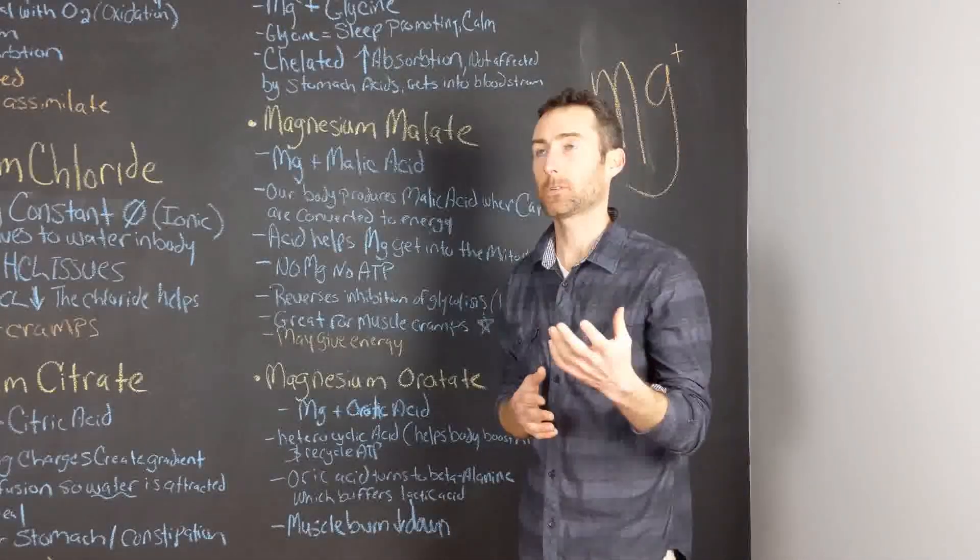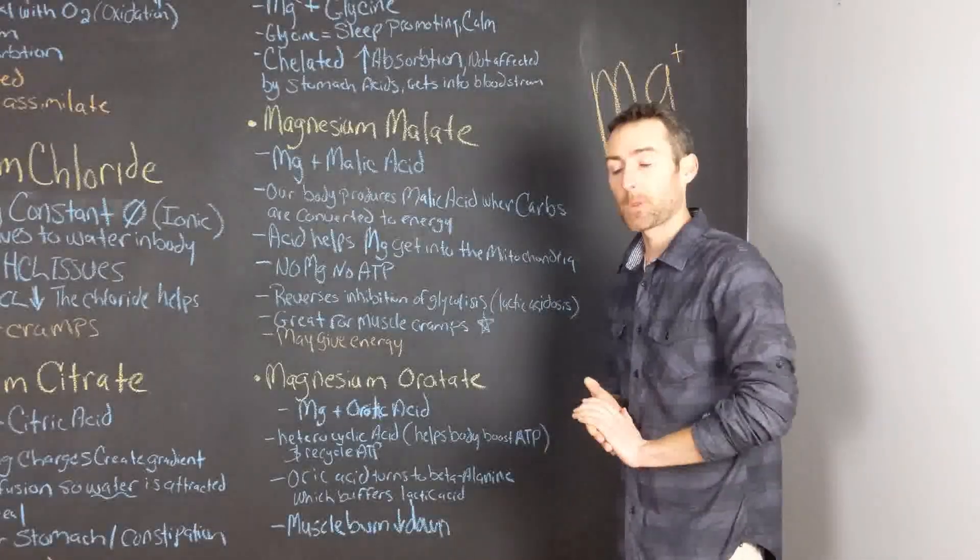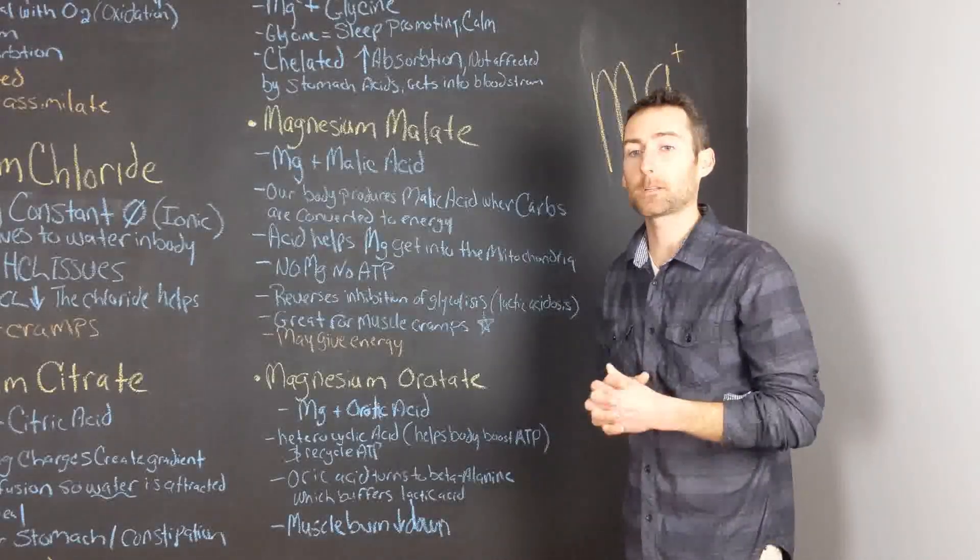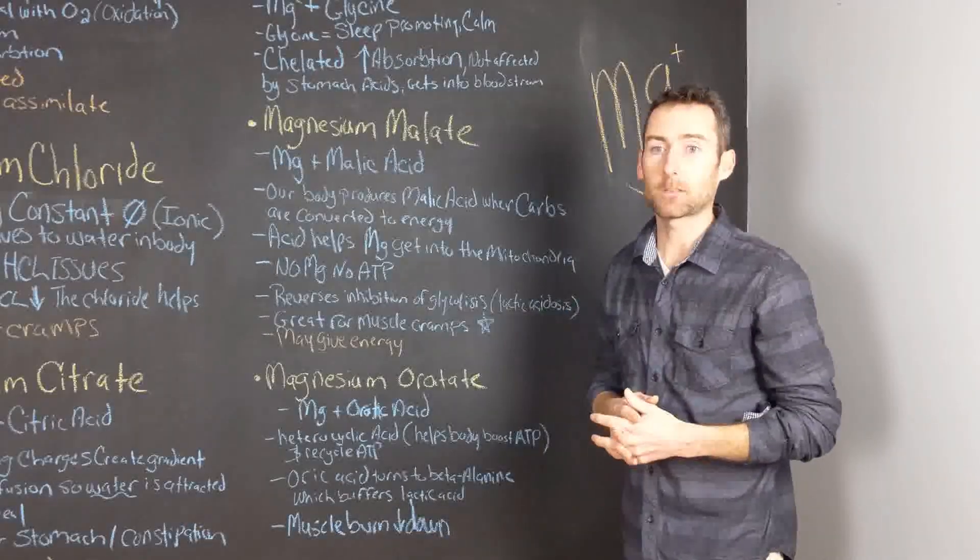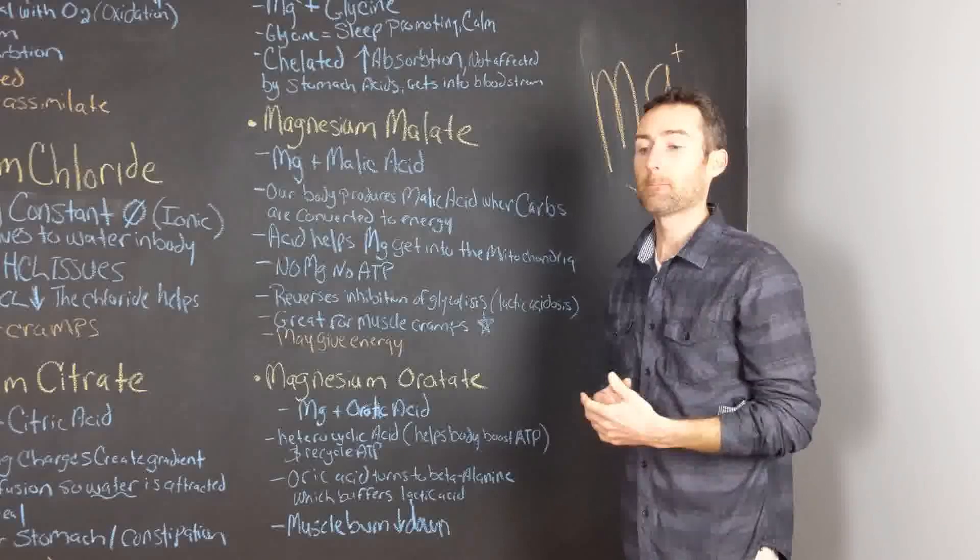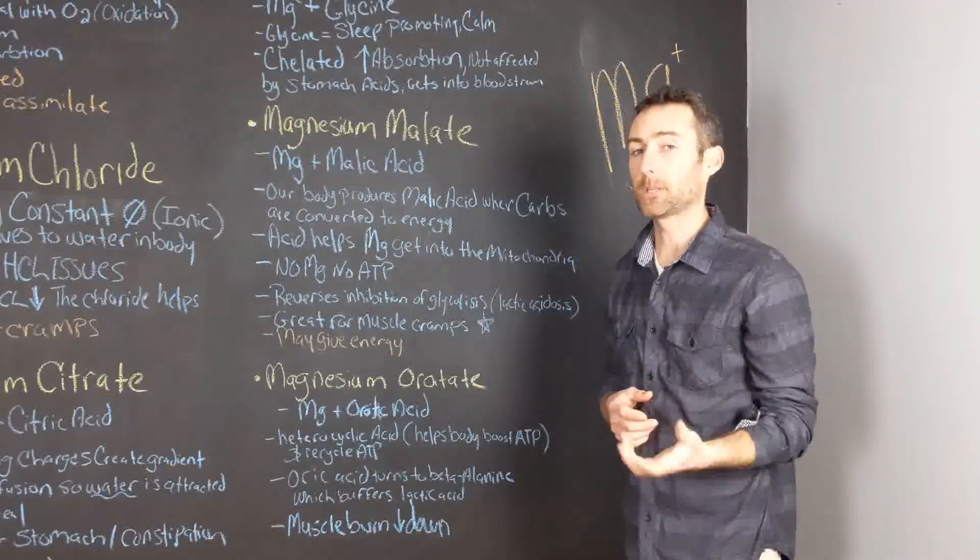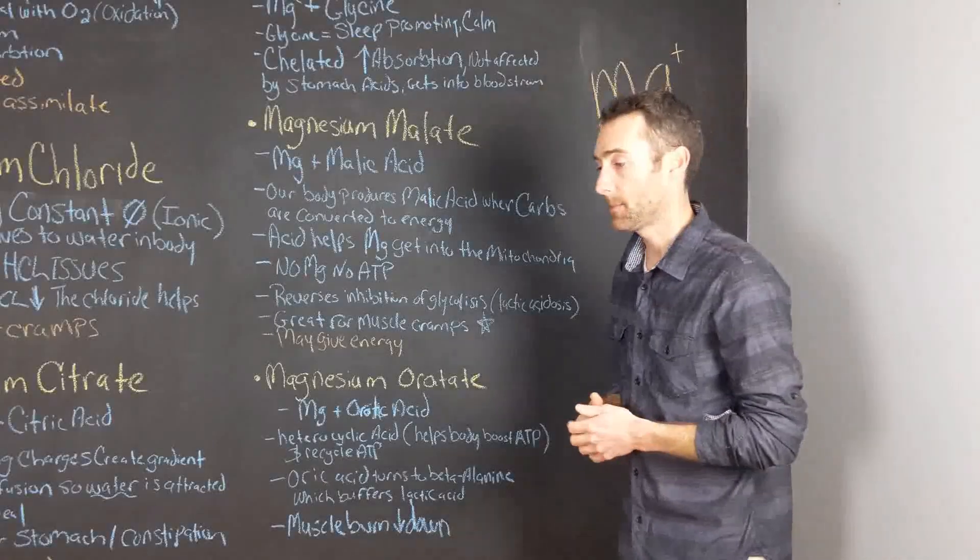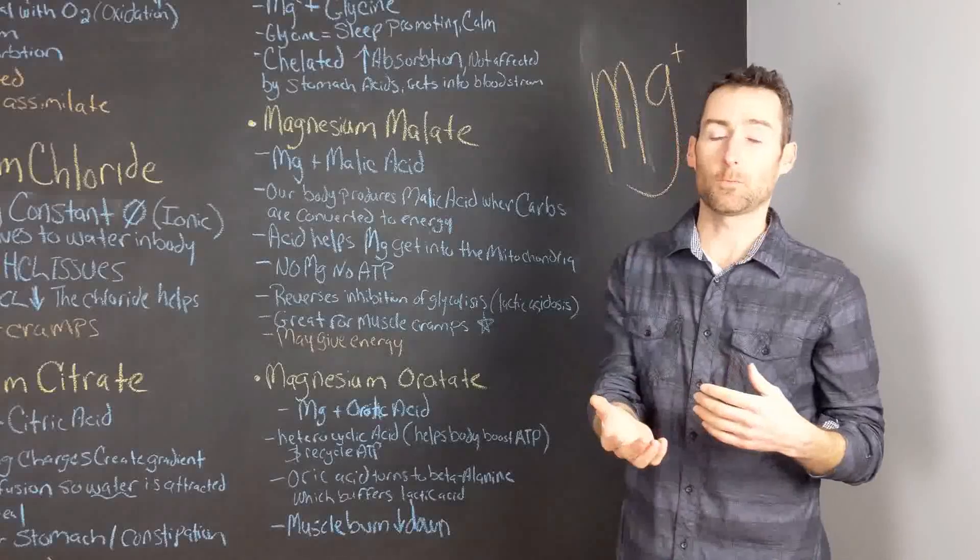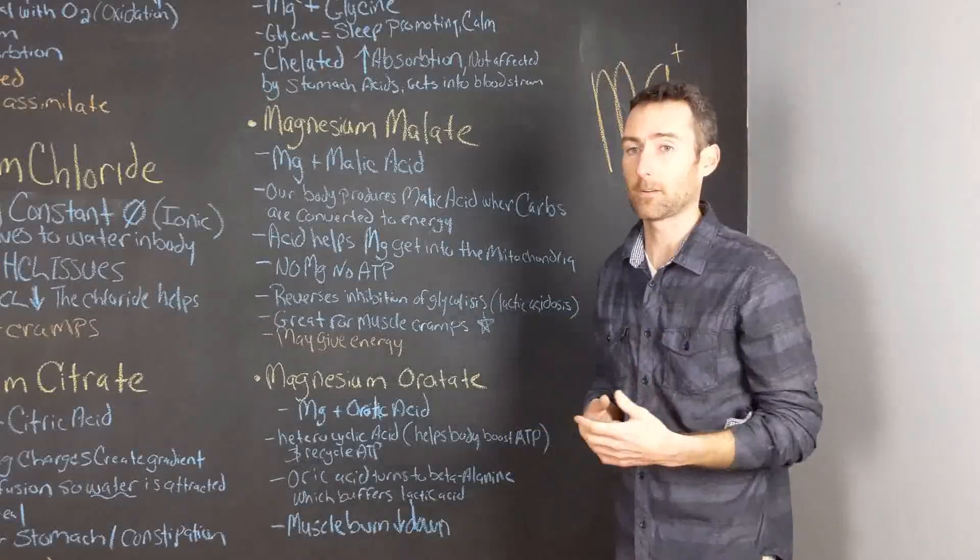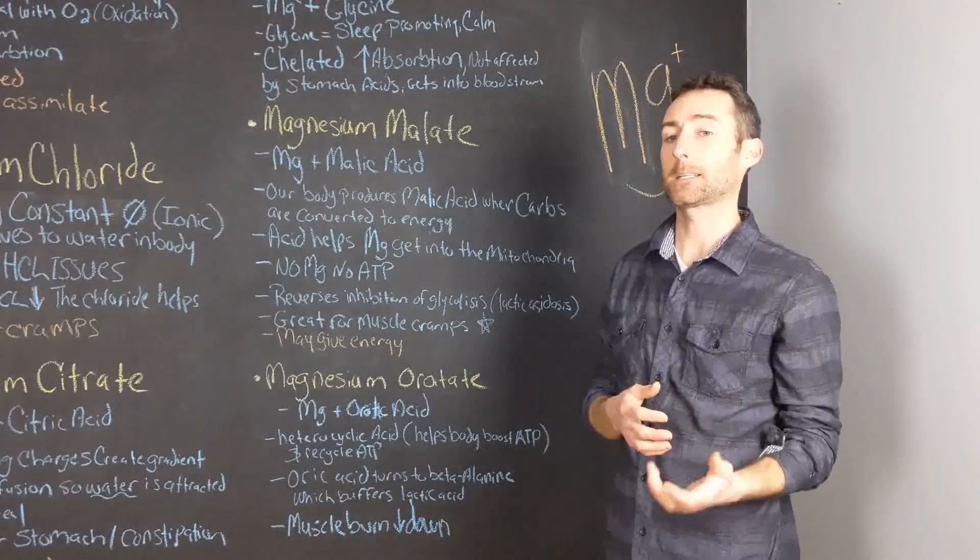Orotic acid actually turns into beta-alanine in the body. Beta-alanine is actually something that bodybuilders take to reduce lactic acid. Lactic acid is a byproduct of working your muscles, basically. Your body's need for energy and the demand for energy and the production of ATP. It'll produce ATP as fast as it can, and it'll do that in a different cellular cycle than what your body would do when you're sedentary. The problem with that is a byproduct is lactic acid.